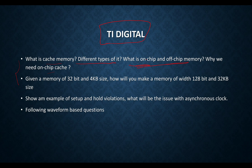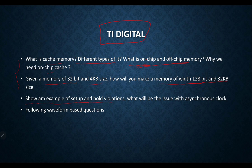They also asked why we cannot have both types of cache memory on-chip. Then they gave me a memory of width 32 bits and 4 KB size and asked me to design a memory of width 128 bits and 32 KB size. The next question was on setup and hold time — they asked me to draw waveforms showing setup and hold violations, and then asked about issues with asynchronous clocks.